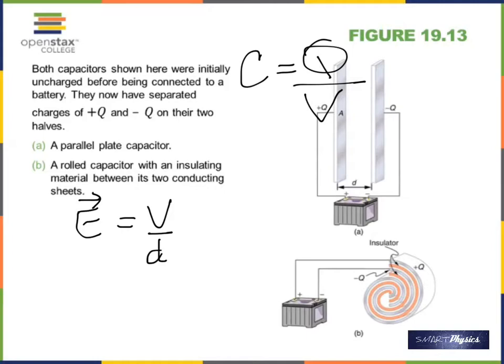In practice, you won't see two flat parallel plates in a capacitor. Instead, aluminum plates and an insulator are layered together and then rolled up, so it takes less space, isn't flimsy, and fits inside a metal cover for protection. But it is still fundamentally a parallel plate capacitor.